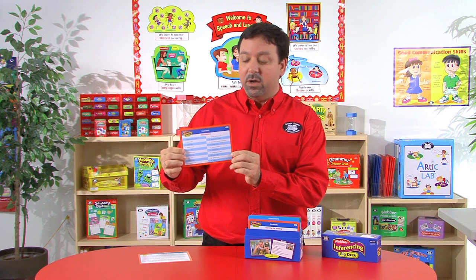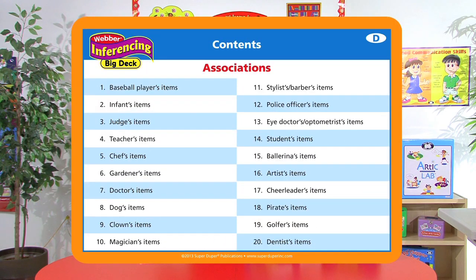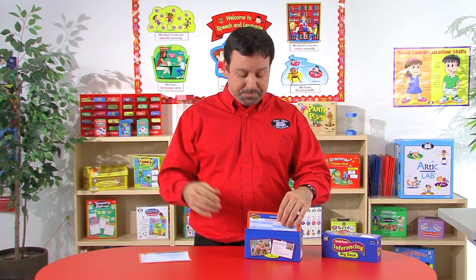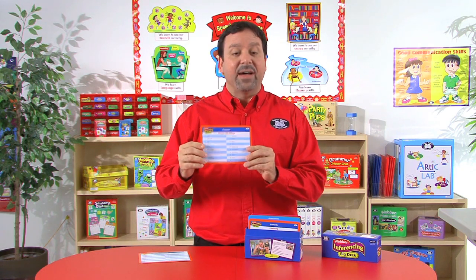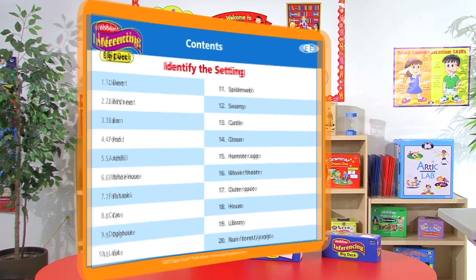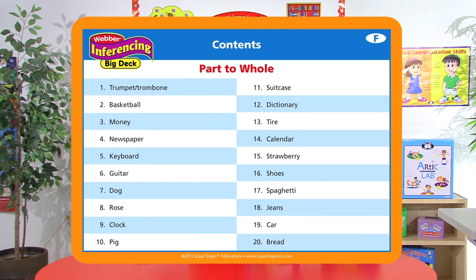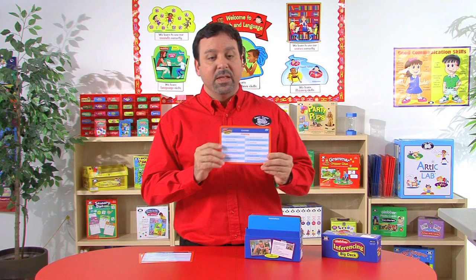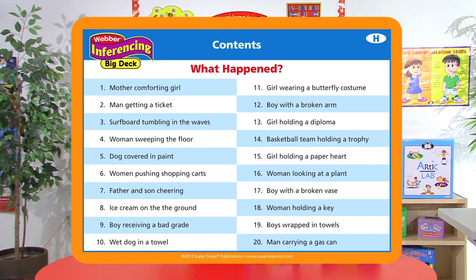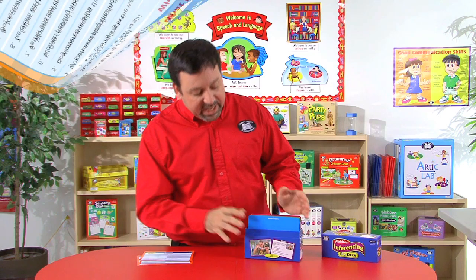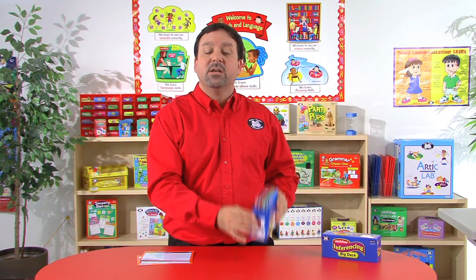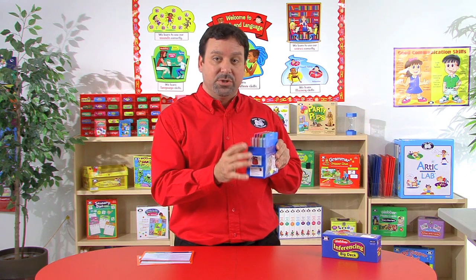Each one has a content card. This is the content card for associations — these items belong to. Then we have identify the setting — where is this? Part to whole — what is it? Then predicting what happens next, and then what happened. Each of these topic areas are color-coded, with dividers in between the cards so they're easy to find and use during your sessions.